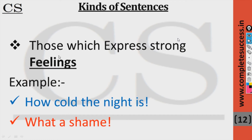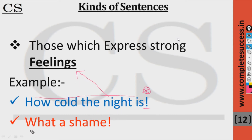The fourth type is those which express strong feelings — like 'How cold the night is!' This is not an interrogative sentence. You will see there is an exclamation sign after the sentence — this expresses a feeling. 'What a shame!' — again, this is expressing a feeling.